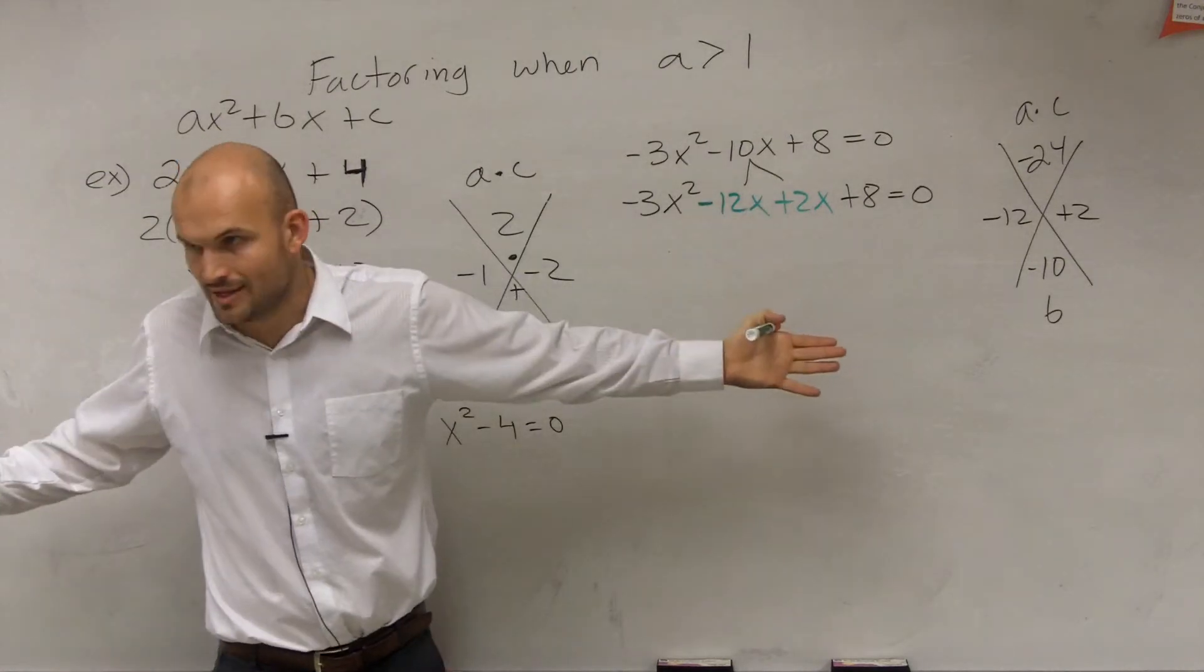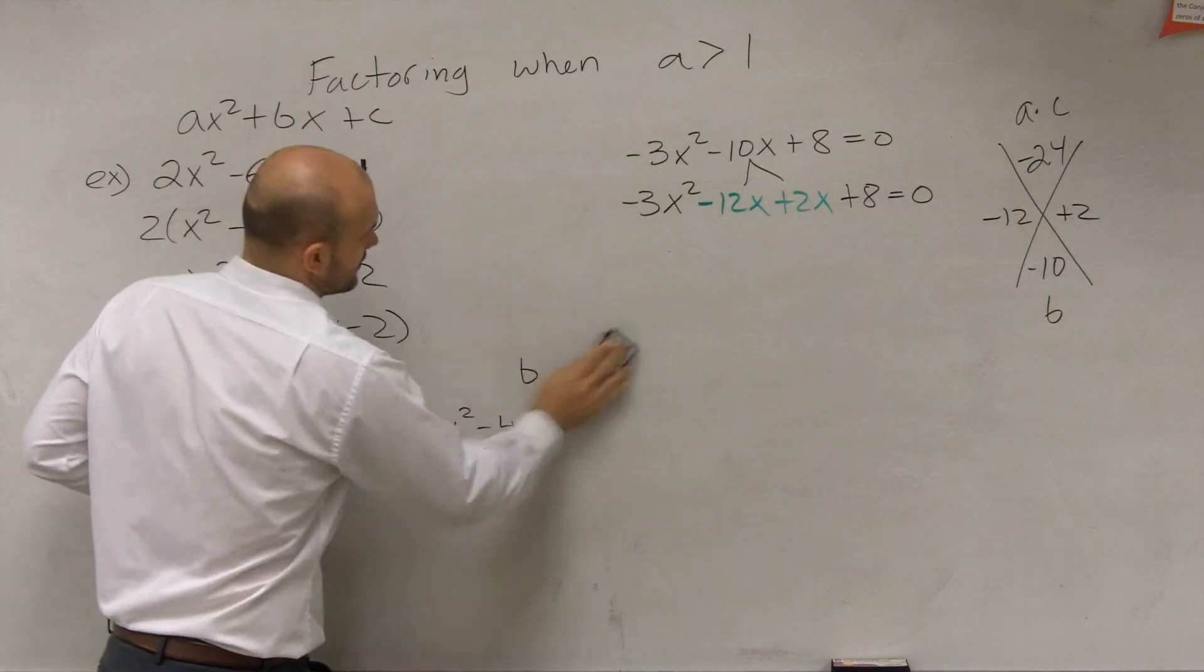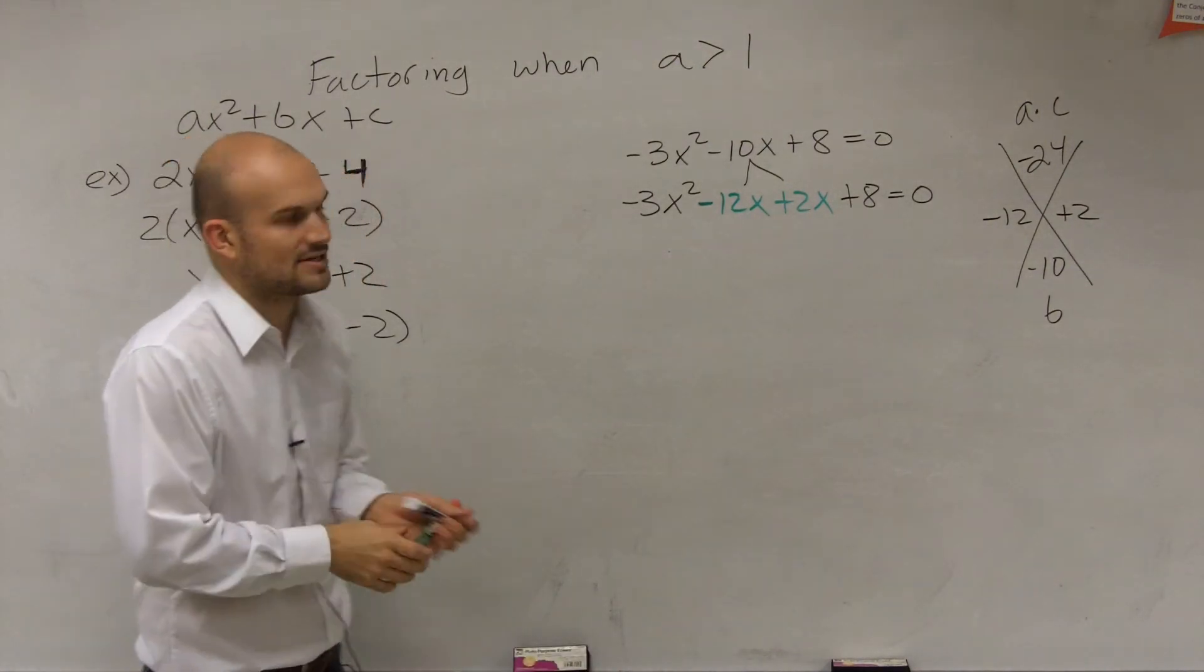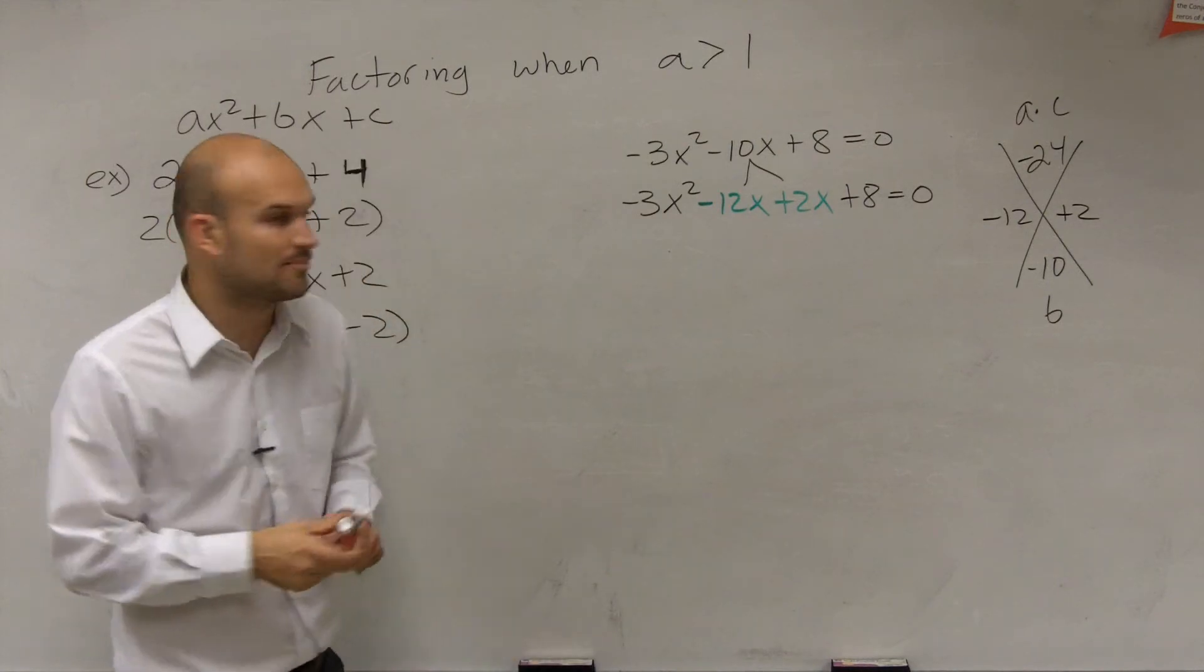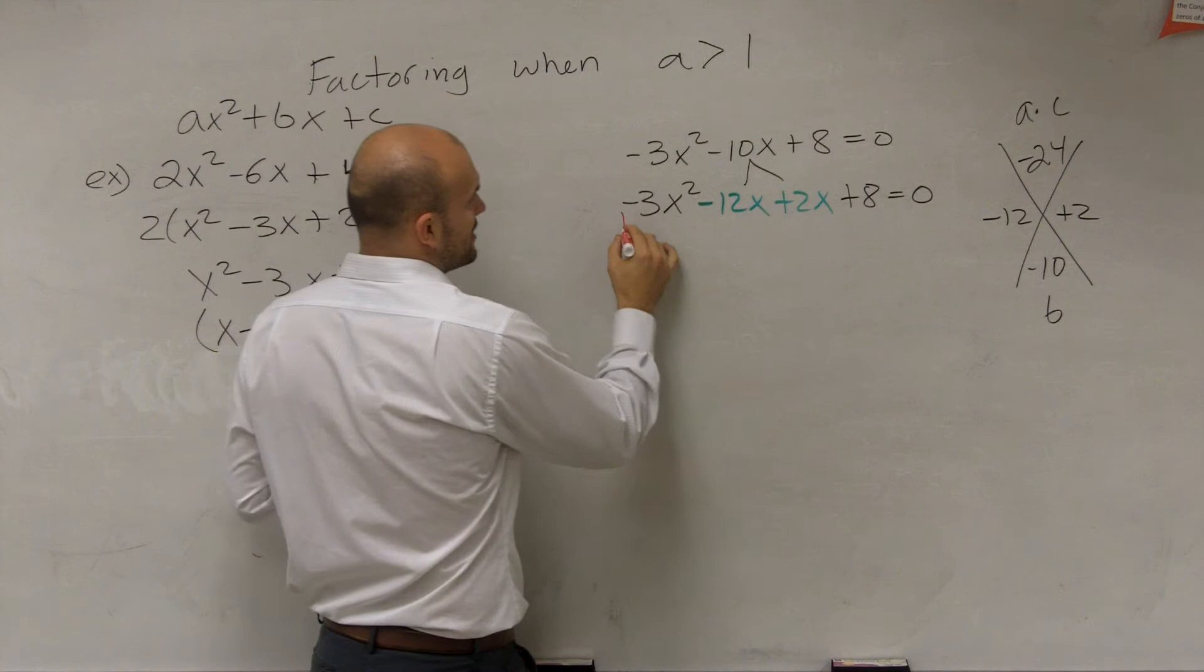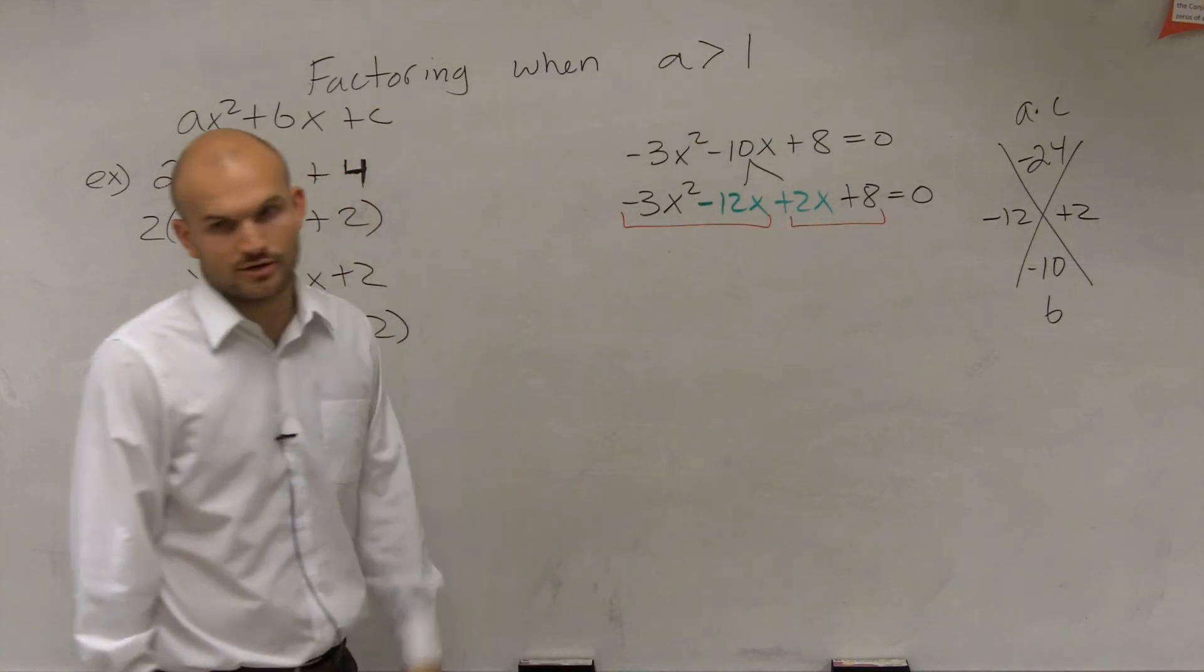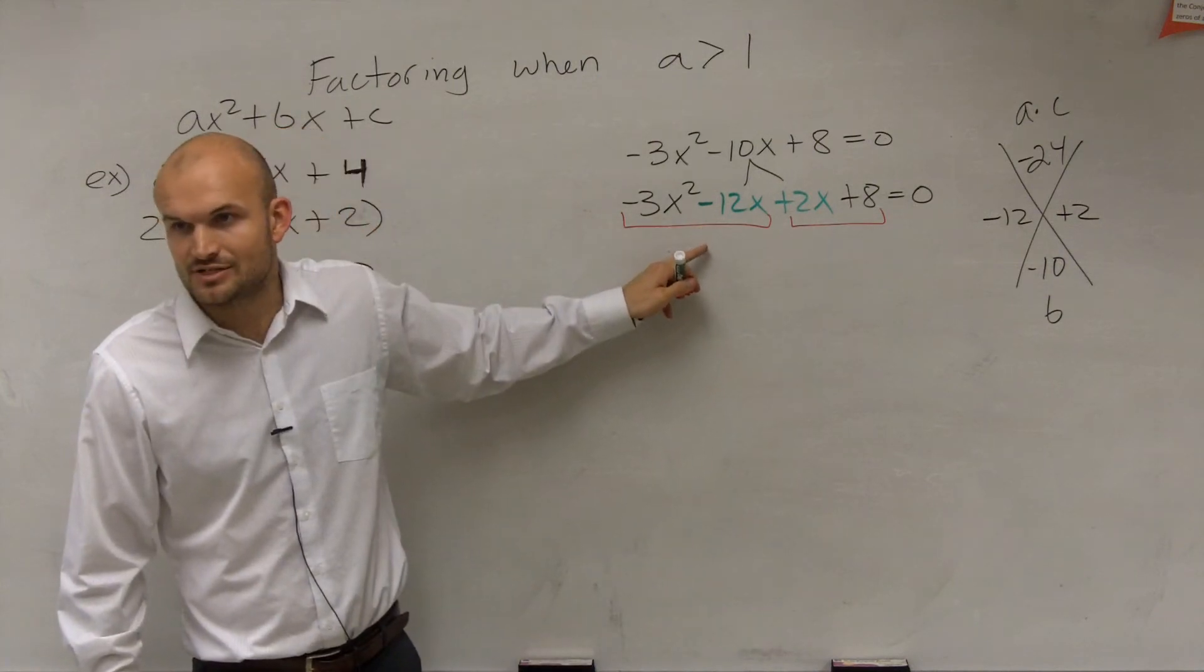Now, why would I do that? Because by splitting the middle term, I can now factor out the GCF from pairs of terms. I'm going to break it up and factor out the GCF from these two terms and from those two terms. Can I factor out the GCF from these two terms? Yes.